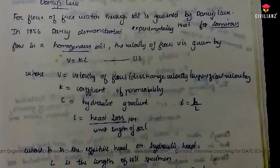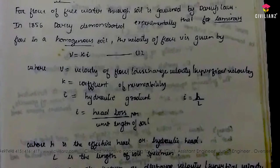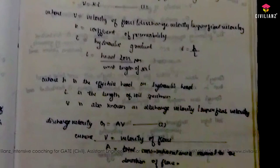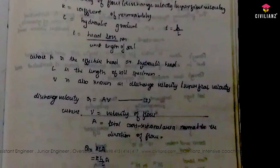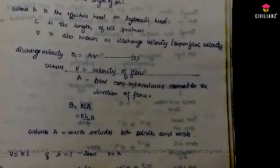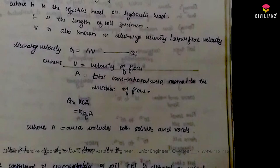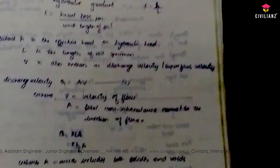k is the coefficient of permeability, and i is the hydraulic gradient equal to h divided by L — that is, head loss per unit length of soil. L is the length of the specimen. The discharge q is equal to A times v, where A is the total cross-sectional area normal to the direction of flow.